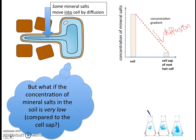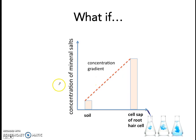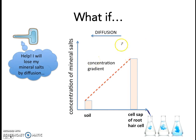But what if the concentration of mineral salts in the soil is very low compared to inside the root hair cell? Now the situation is reversed. The mineral salts have a very low concentration in the soil and a much higher concentration inside the root hair cell, so the concentration gradient is now in the other direction. What will happen naturally? There will be diffusion of the mineral salts out of the cell into the soil.